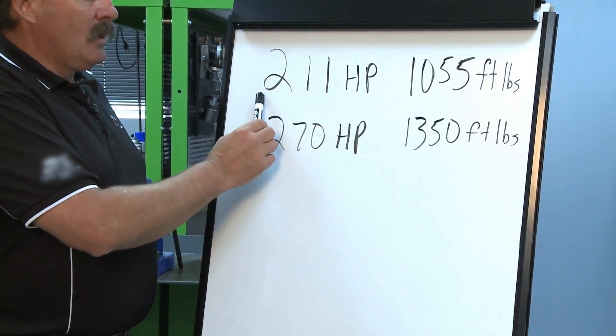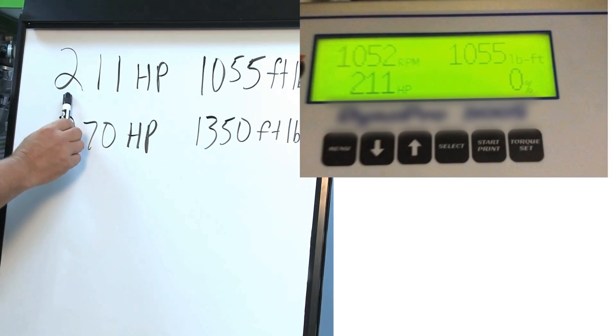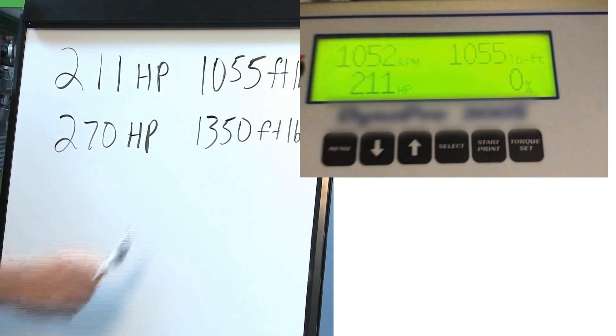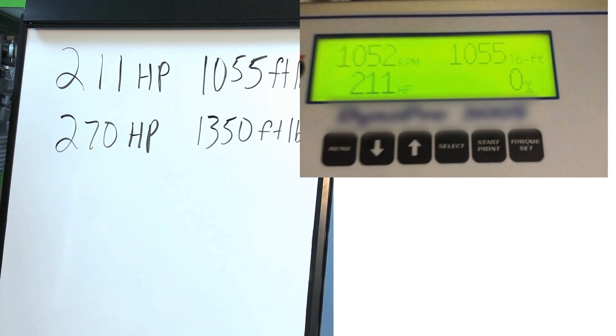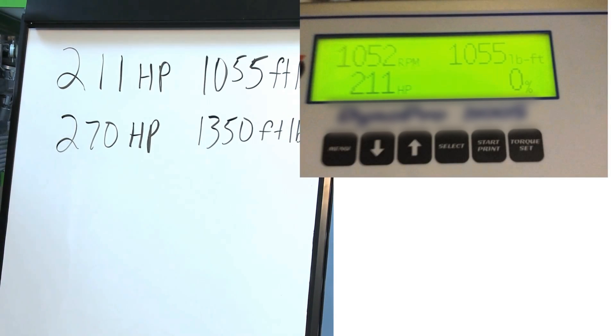If you look at the numbers here, his factory horsepower was 211 with 1,055 foot-pounds of torque. And really, in tractors, it's the torque number that makes a difference when you're pulling heavy loads or using the PTO on that tractor to run a chopper or other piece of equipment.